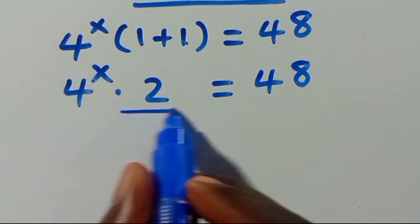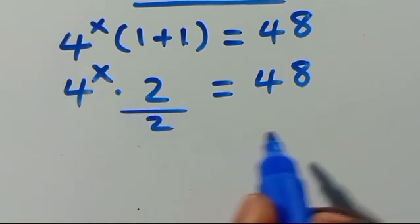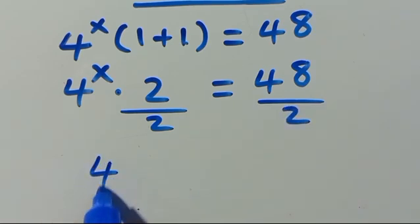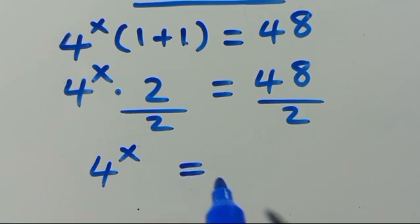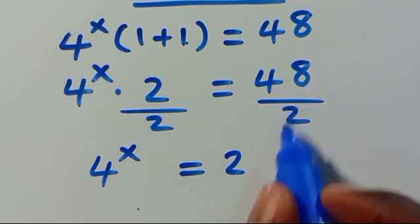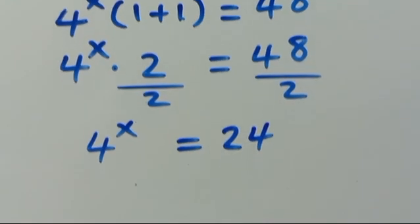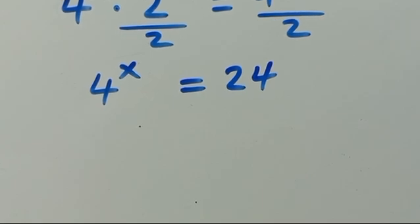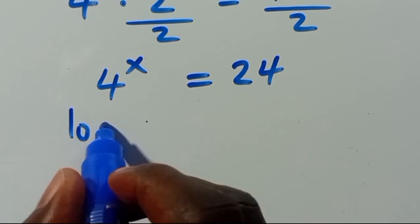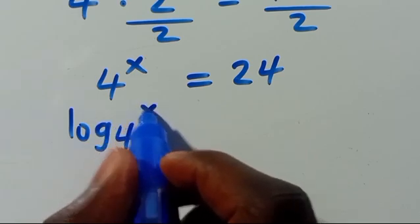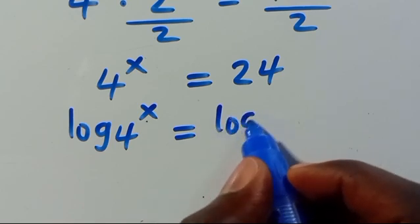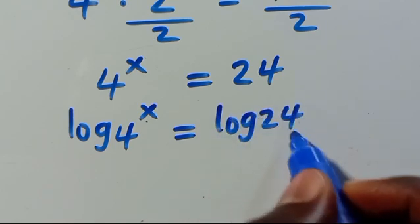So from here, 1 plus 1 equals 2, giving us 2 times 4 to the power of x equals 48. We then divide both sides by 2, so 4 to the power of x equals 24. From here, let us introduce log to both sides: log of 4 to the power of x equals log 24.